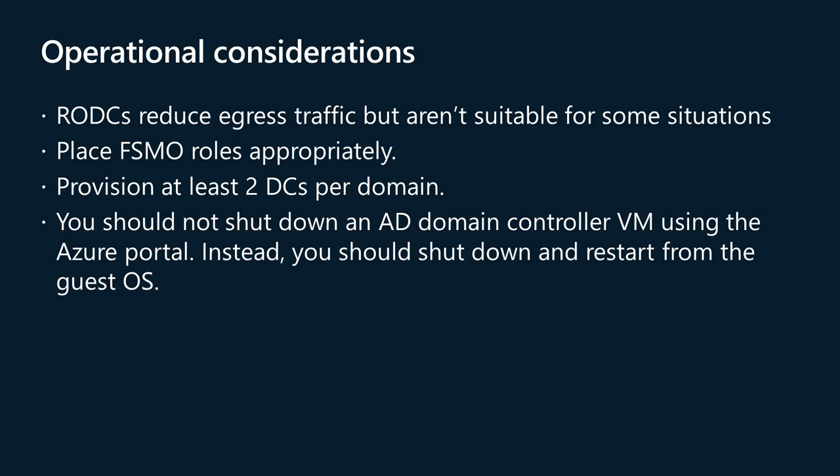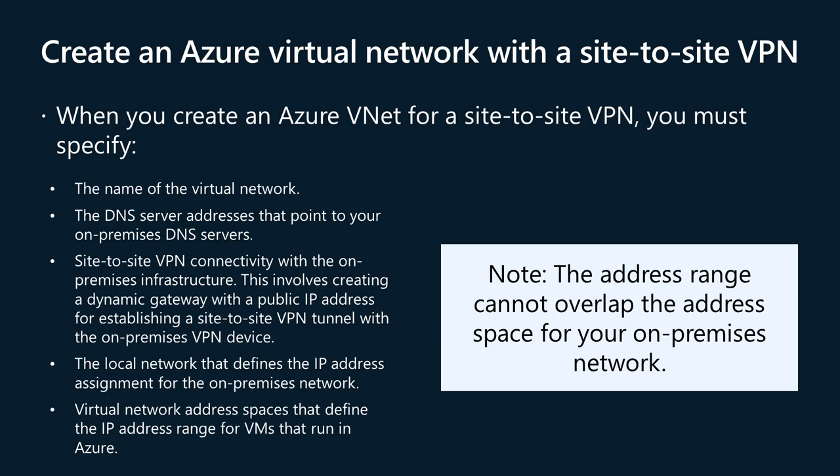The requirements for creating a domain controller on an Azure VM as a replica domain controller or in a new forest are similar. Both scenarios require a storage account for creating the OS and data disk for the VM, and as a best practice you should configure the domain controller with static IP addresses. In the cross-premises scenario, you must configure a VNet using site-to-site VPN or ExpressRoute, specifying the virtual network name, DNS server addresses pointing to your on-premises DNS servers, a dynamic gateway with a public IP address for the site-to-site VPN tunnel, and virtual network address spaces that cannot overlap the address space for your on-premises network.